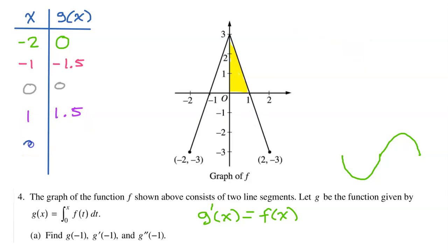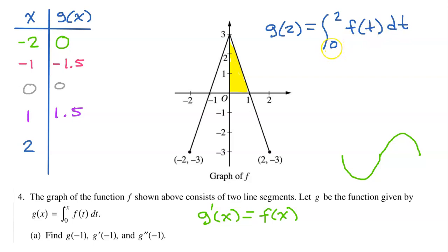For x equals two, g at two equals the integral from zero to two of f at t dt. This is the area between the curve and the x-axis from zero to two, which consists of two triangles. These two triangles have the same area — the yellow triangle is positive because it is above the x-axis, while the blue triangle is negative because it is below the x-axis. When we add them together, they cancel out to make zero. So our final point is 2, 0.